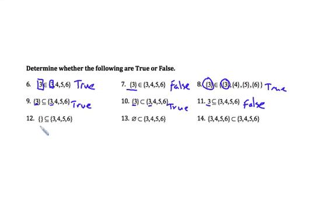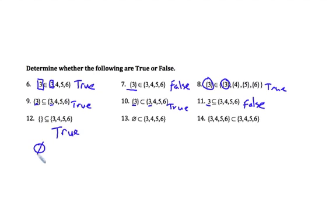In number 12, we have the null set — or empty set — and we're checking if it's a subset of {3, 4, 5, 6}. We've been asking if everything in one set is in the other. But what if there's nothing in the set? It turns out if there's nothing in the set, we do say this is a subset. The null set is always going to be a subset of every set.